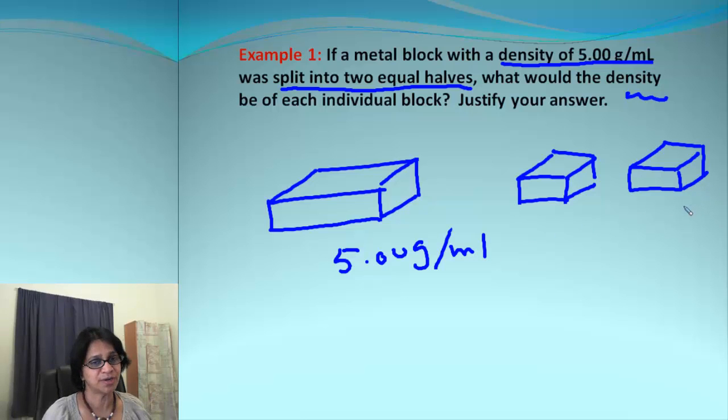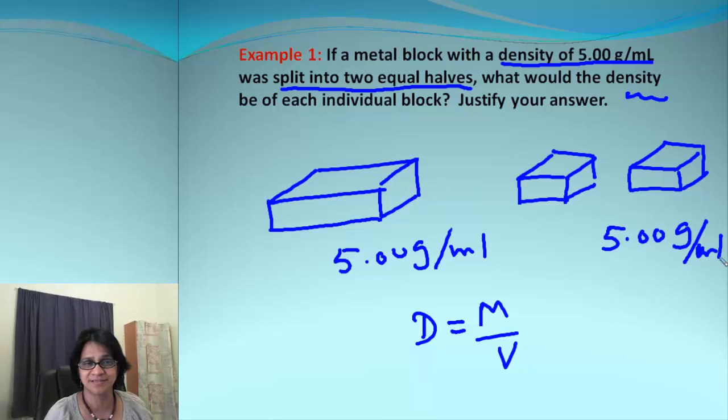If you look carefully, the size of the object is changing, so volume is changing. Density is mass over volume, but what happens to mass? If the object size is different, the mass also will change. Mass and volume both keep on changing, so even though we divide that block into two equal pieces, the density will still remain the same - still 5 grams per milliliter. That's called a physical intensive property which does not change with the change in the size of the object.